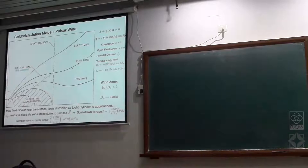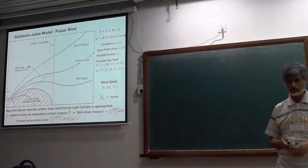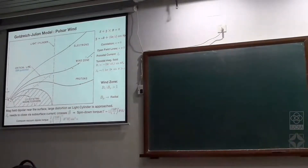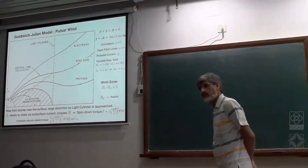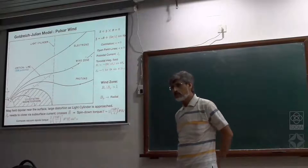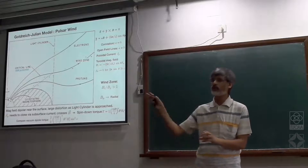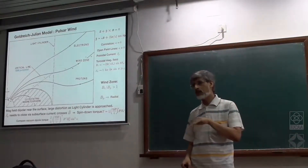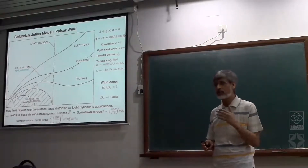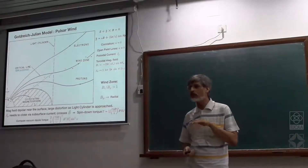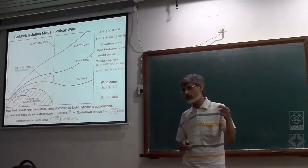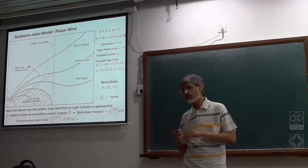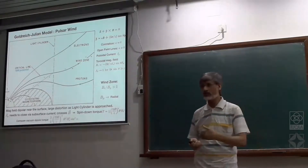Since it's a continuous flow, positive charges in that region can flow out through the light cylinder, giving a continuous current. If you take one sign of charge from one particular region of the surface and keep moving them out, that part of the surface will become oppositely charged. There is a certain charge distribution which leads to E·B equal to zero. If the charge distribution differs from that, then E·B will no longer be zero, and the local charges will move because of that force, constituting the current.